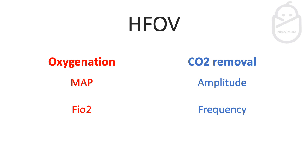The main difference between high frequency oscillation and conventional ventilation is that in conventional ventilation, changing the PIP affects both oxygenation and CO2 removal simultaneously. In HFO, you have two separate entities. To control oxygenation, you have two elements: the mean airway pressure (MAP) and the FiO2 — how much oxygen you're giving to the child.